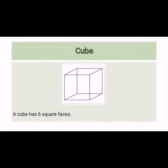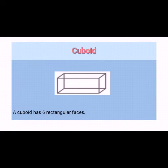The first solid shape shown here is a cube. A cube has six square faces. This is a cuboid. A cuboid has six rectangular faces.